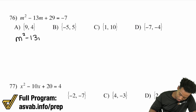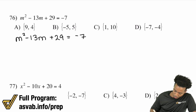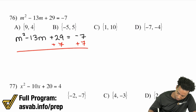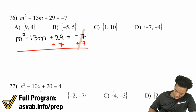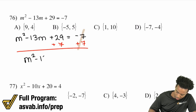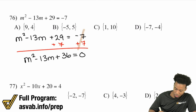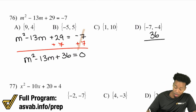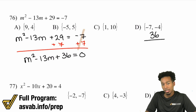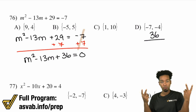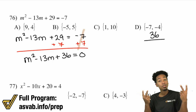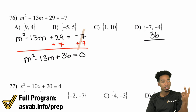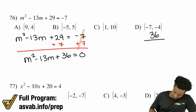We have M squared minus 13M plus 29 equals negative 7. So we'll go ahead and add 7 on both sides to get that zero on the right side. That gives us M squared minus 13M plus 36 equals zero. Now we're going to find the factors of 36 that add up to negative 13. We have a positive 36, so both factors are either both positive or both negative. Because they add to negative 13, they're both going to be negative.